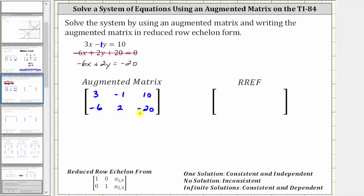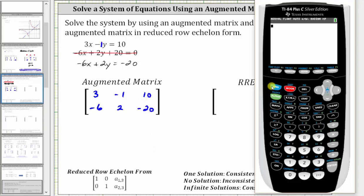The next step is to enter the augmented matrix in the TI-84. So we press second, x to the power of negative 1 for the matrix menu, right arrow twice to edit. Let's enter the matrix in matrix A. So we press enter.